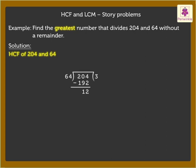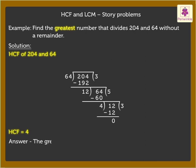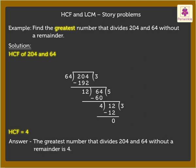Let us do it. Thus, HCF is equal to 4. So, the greatest number that divides 204 and 64 without a remainder is 4.